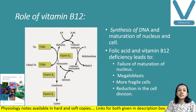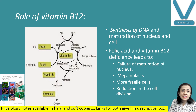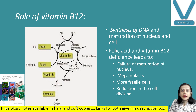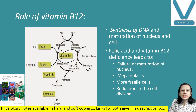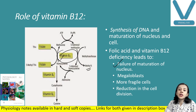The role of vitamin B12 includes synthesis of DNA and maturation of the nucleus and cell. Vitamin B12 is required for the methylation step involving S-adenosylmethionine and S-adenosylhomocysteine via methyltransferase. In deficiency of vitamin B12, RBCs do not mature — they are larger immature cells, and the resulting anemia involves large cells called megaloblasts.